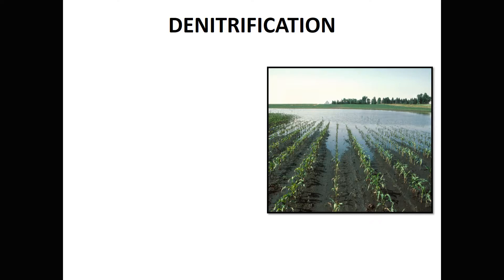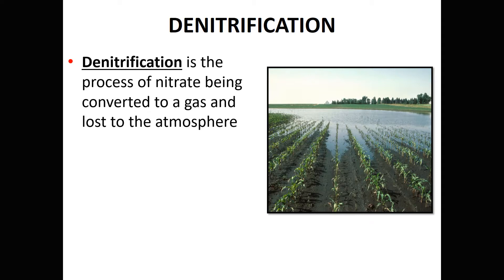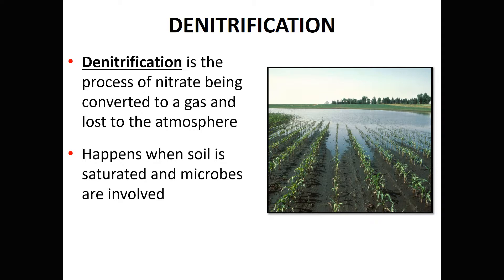Another avenue of loss is denitrification — the process of nitrate being converted to a gas and lost to the atmosphere. It happens when the soil is saturated and microbes are involved. The microbes need oxygen, but when all pore space is filled with water, they grab the nearest oxygen source and tend to grab an oxygen off of nitrate. Nitrate has three oxygens, and when one oxygen is removed by the microbes, it becomes an unstable gas and is lost to the atmosphere.